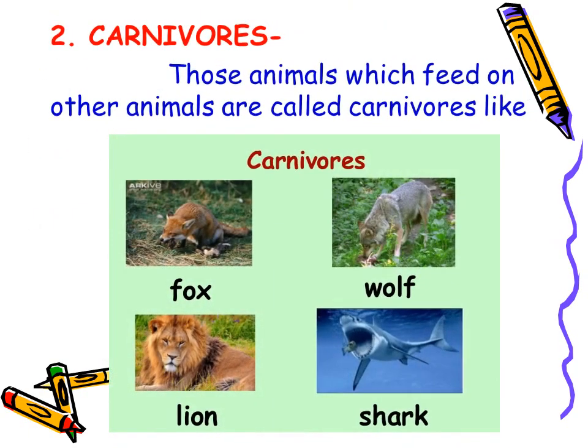The second type is carnivores. Those animals which feed on other animals are called carnivores. They do not eat plants; they eat the flesh of other animals. Examples are fox, wolf, lion and shark.